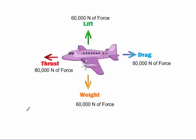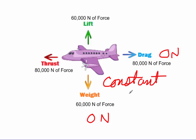Here we have an airplane moving forward with 80,000 newtons of force. Drag — all the air hitting the wings and airplane — is applying 80,000 newtons of force in the opposite direction; that's the friction resisting movement. The wings are lifting the airplane up with 60,000 newtons of force, and gravity is pulling down with 60,000 newtons. So 60,000 up and 60,000 down cancel out — zero net force vertically. 80,000 forward and 80,000 drag cancel out — zero net force horizontally. The net forces on this airplane are zero, which means it's moving at a constant speed.